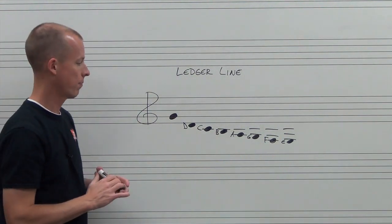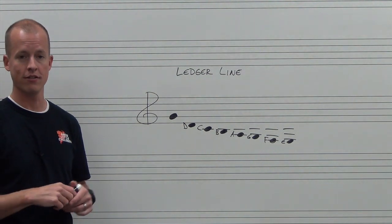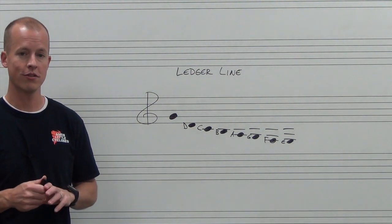And clarinets do play all the way down there. So that's how we read ledger lines for extra high notes and extra low notes in G clef.